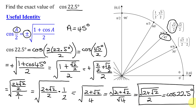And don't forget, you can check it on your calculator. You could put in the cosine of 22.5 degrees, see what the answer is, then put this expression in the calculator and see if you get the same answer.